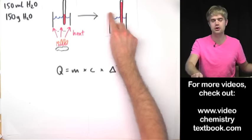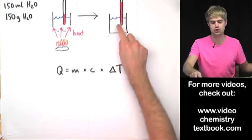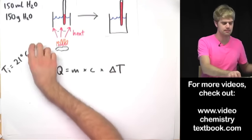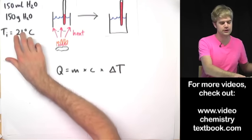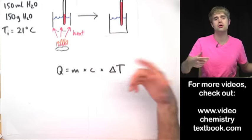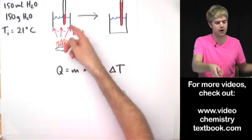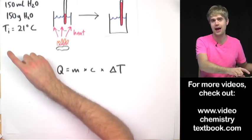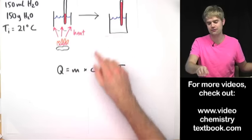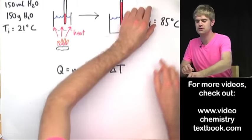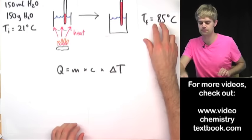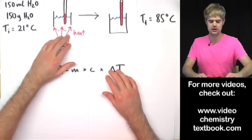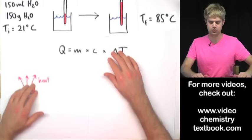We'll also need to know the temperature change for the water. The initial temperature before we started burning the potato chip under the water is 21 degrees Celsius, and after the potato chip is finished burning, the final temperature is 85 degrees Celsius.